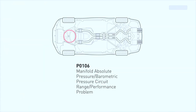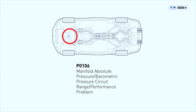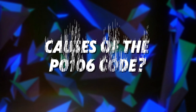The P0106 code indicates that there is an issue with the manifold absolute pressure MAP sensor. It could be caused by a faulty or dirty MAP sensor, wiring or connection issues, vacuum leaks, clogged or dirty air filters, or a failed PCM or ECM.